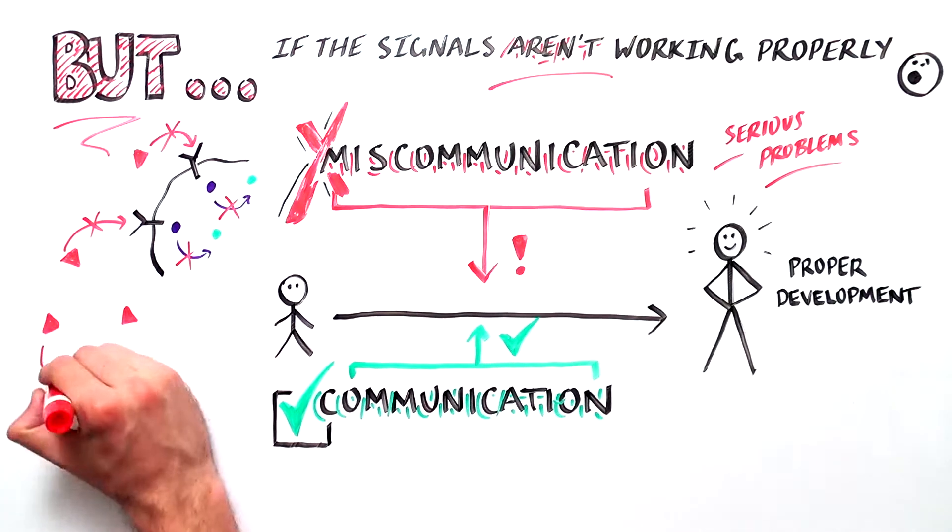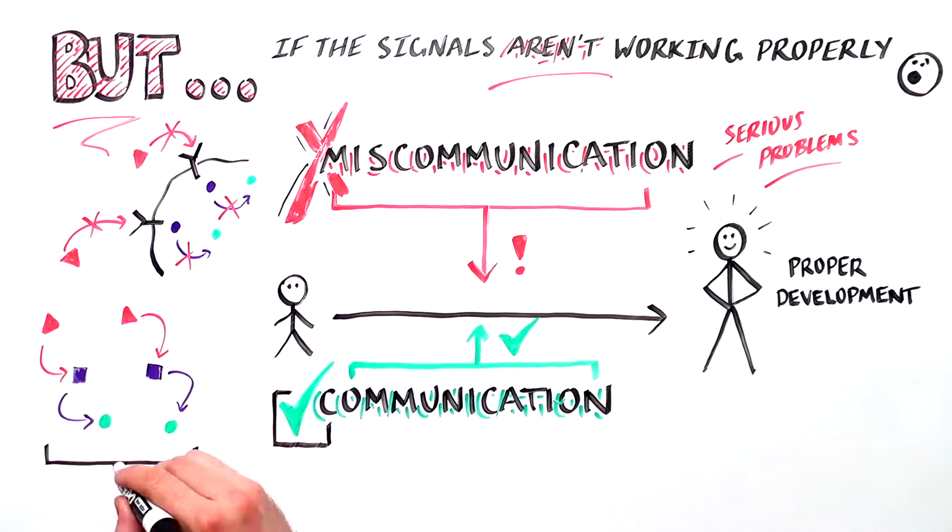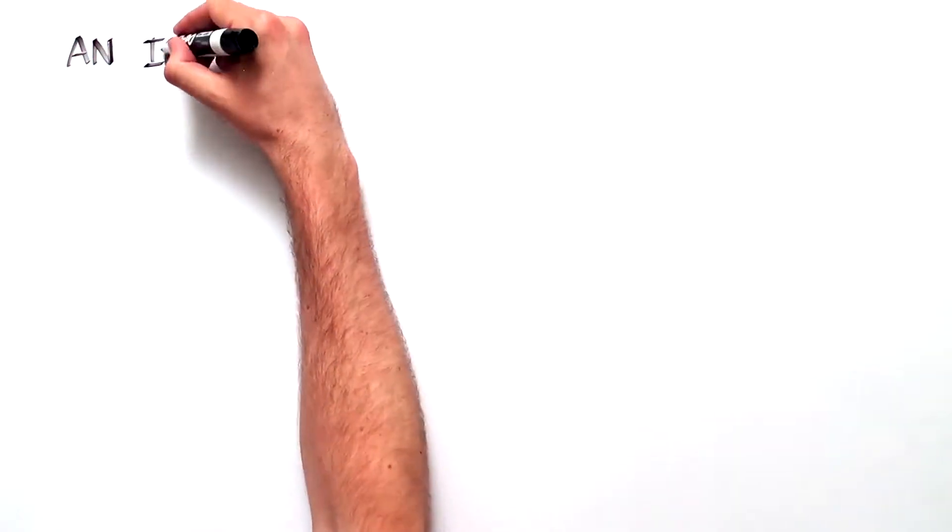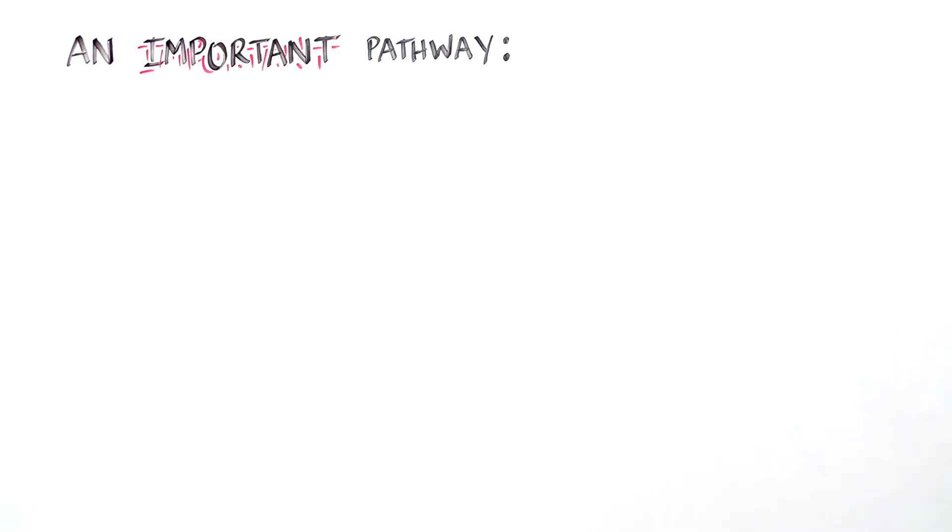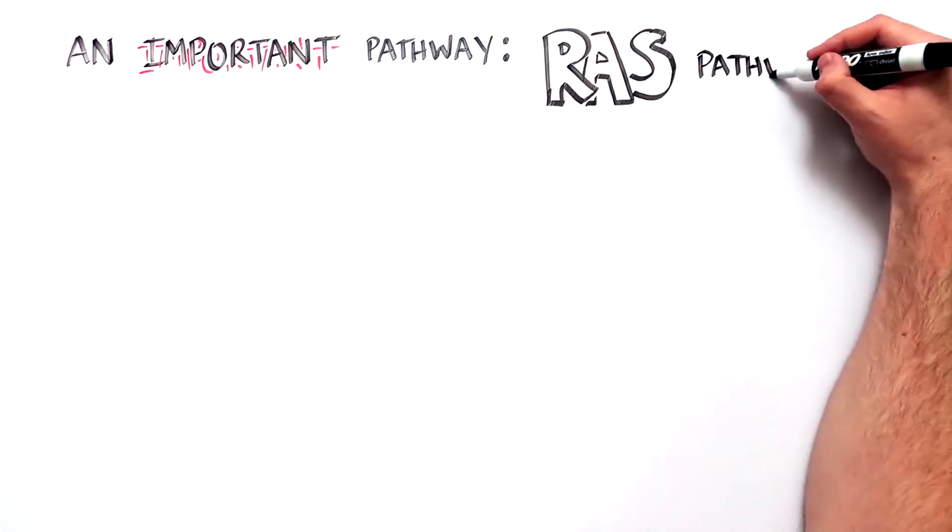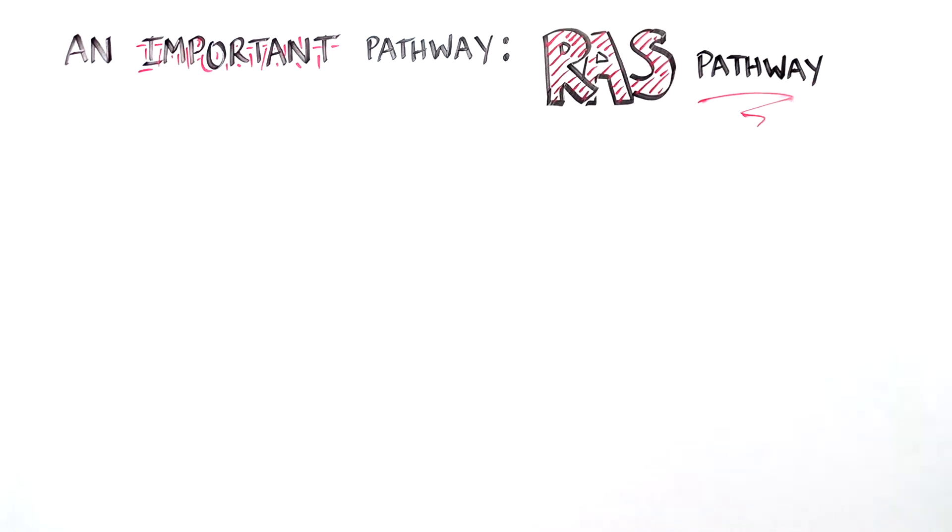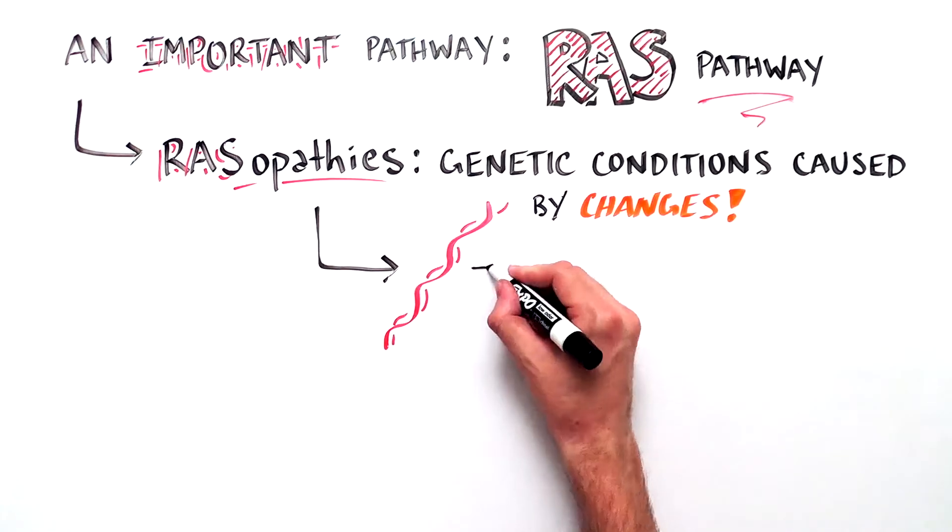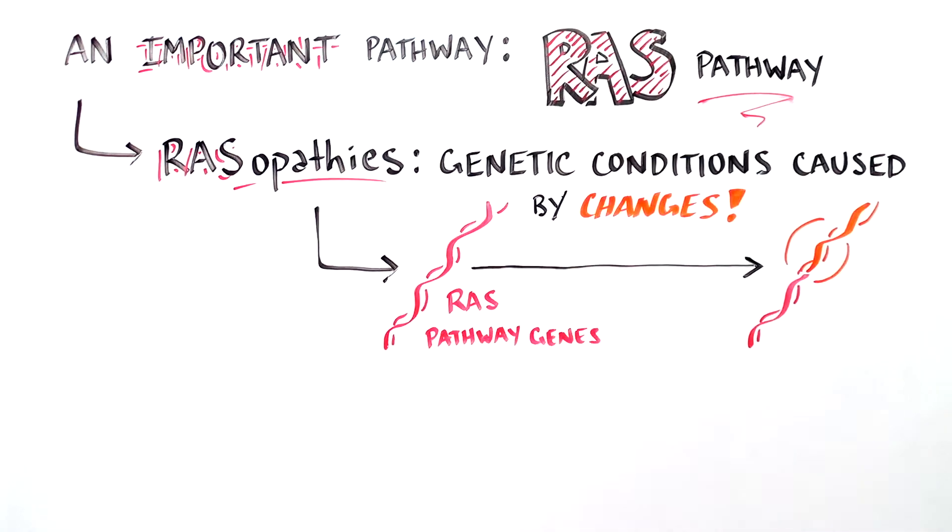A group of proteins that routinely send signals and communicate with each other is called a pathway. One important signaling pathway that is involved in how cells communicate is called the RAS pathway. A RASopathy is a genetic condition that is caused by changes in genes that code for proteins in the RAS pathway.